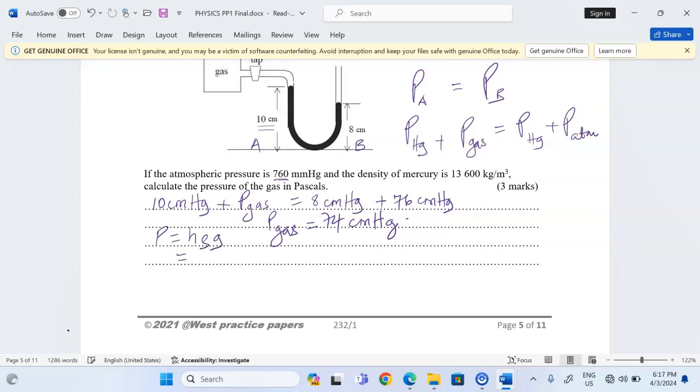Therefore the height of pressure which is equivalent to pressure of the gas is 74 centimeters of mercury, so we can divide by 100 to make it as a unit that is the meter, multiplied by 13,600 the density of mercury multiplied by g which is equivalent to 10.